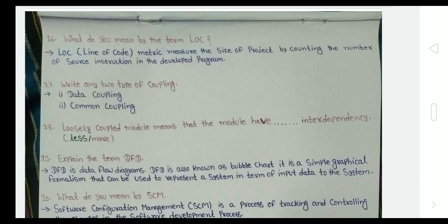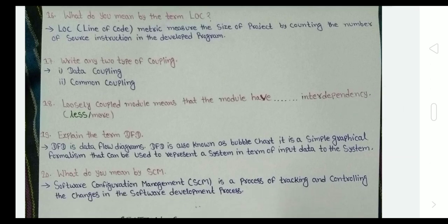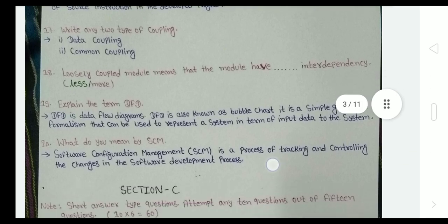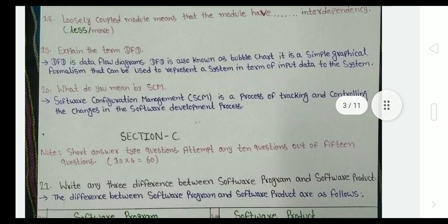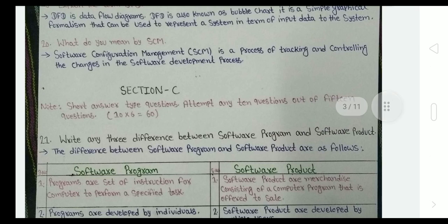In software engineering also, the questions can be repeated. Question 17: write any two types of coupling - data coupling, common coupling. Loosely coupled module means that the modules have less interdependency. Explain the term DFD: Data Flow Diagram, also known as bubble chart. It is a simple graphical formalism that can be used to represent a system in terms of input data to the system. What do you mean by SCM? Software Configuration Management is a major process of tracking and controlling the changes in the software development process.